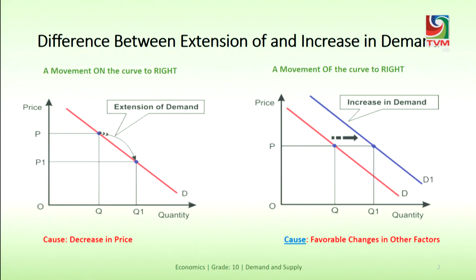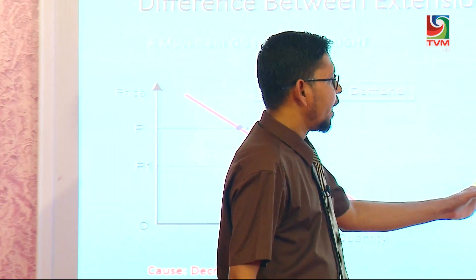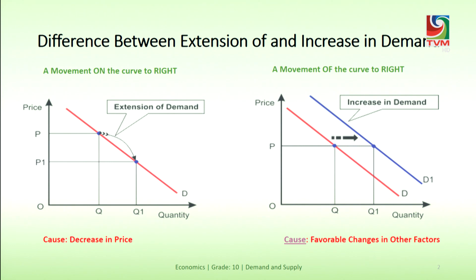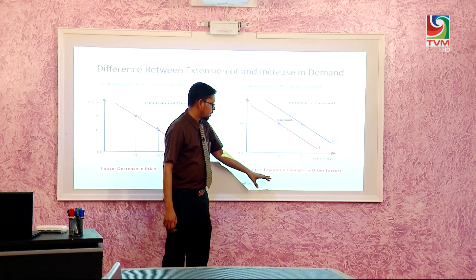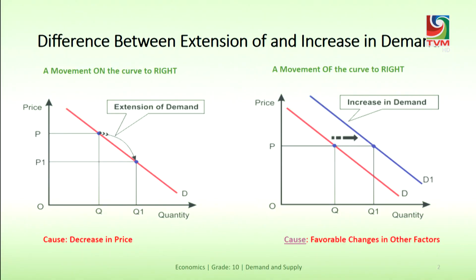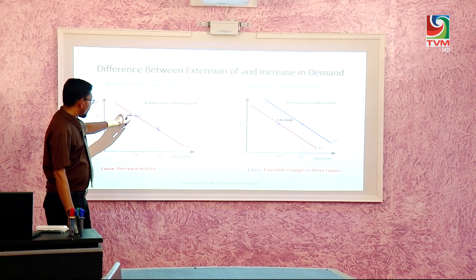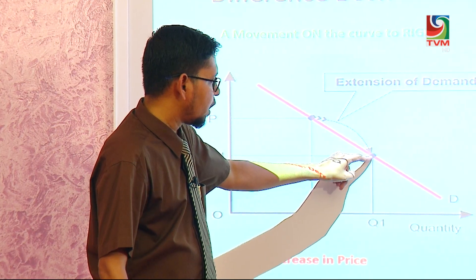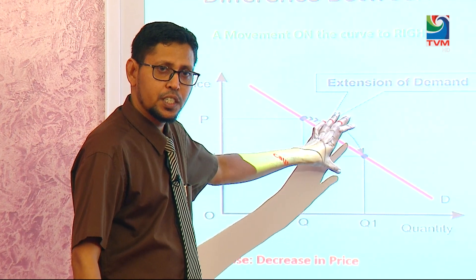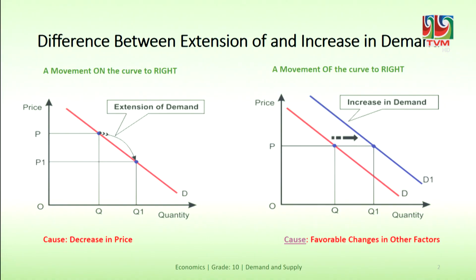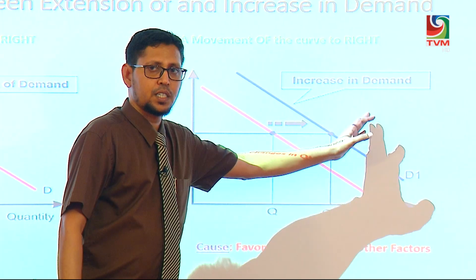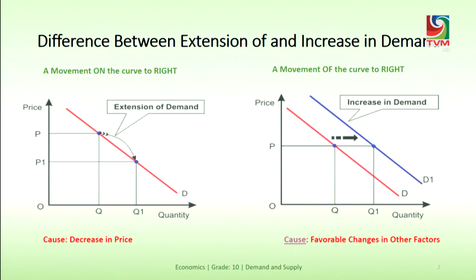However, the increase occurs due to other factors — the other factors that affect the demand. The increase occurs due to factors like increasing income, increasing population that you have studied. So, the difference is: extension is a movement on the demand curve to the right, while an increase is a movement of the demand curve to the right. I hope you understand that much.